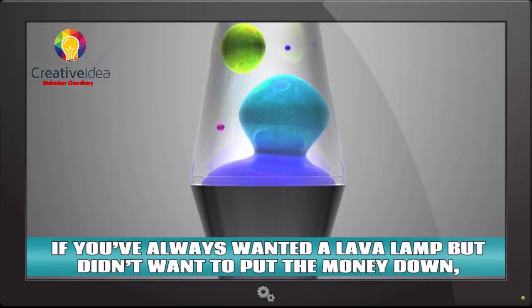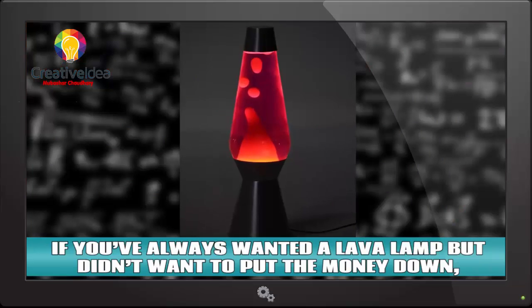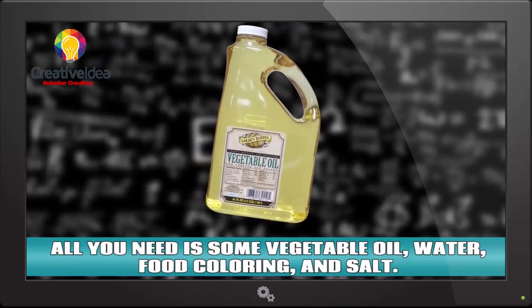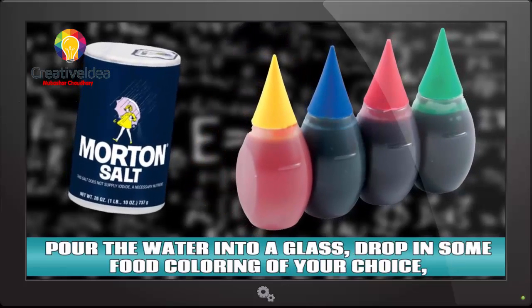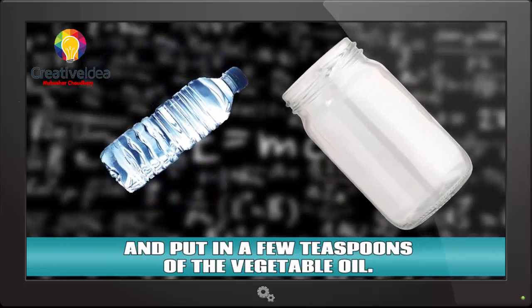Homemade lava lamp. If you've always wanted a lava lamp but didn't want to put the money down, you can make something similar at home. All you need is some vegetable oil, water, food coloring, and salt. Pour the water into a glass. Drop in some food coloring of your choice and put in a few teaspoons of the vegetable oil.